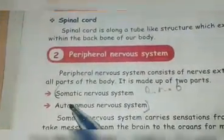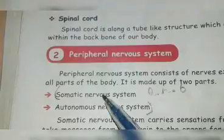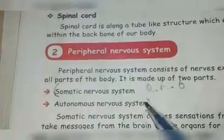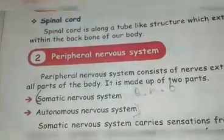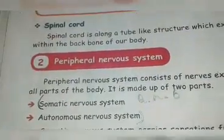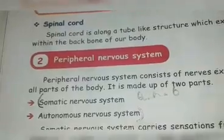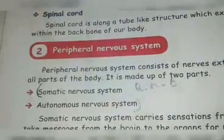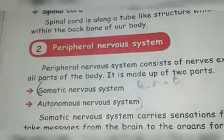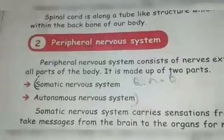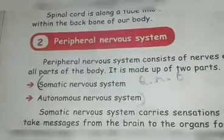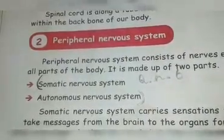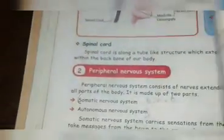Sixth question: what are the two parts of the peripheral nervous system? Page number eight. The two parts of the peripheral nervous system are the somatic nervous system and the autonomic nervous system. Write both parts to get full marks.